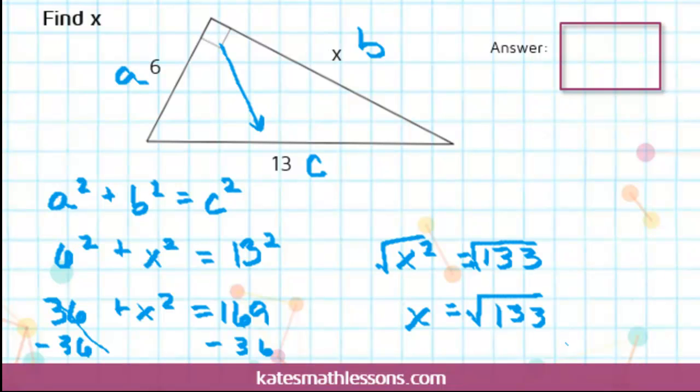If you're asked to give an exact answer, you could just leave it like this and say X equals the square root of 133. Or you might be asked to round it. So if we plug that in our calculator, it would come out to approximately 11.53.